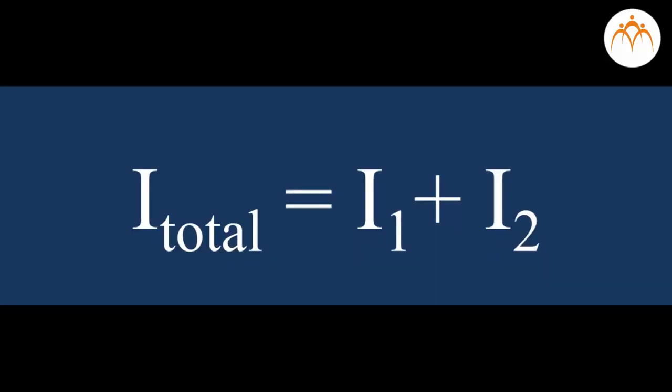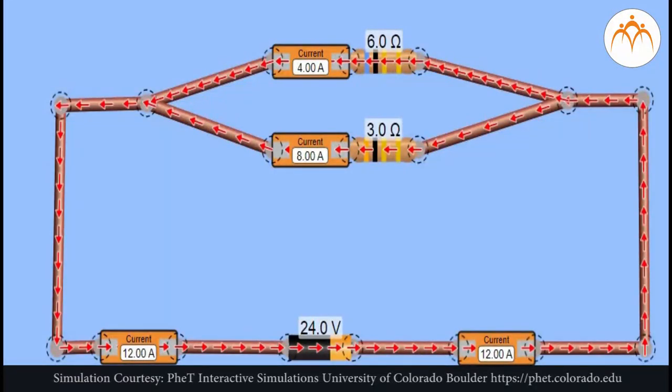This can be summarized in the form of an equation: I total is equal to I1 plus I2, where I total is the total amount of current outside the branches and in the battery, and I1, I2, I3 and so on represent the current in individual branches of the circuit. The diagram displays two resistors in parallel with nodes at point A and point B.